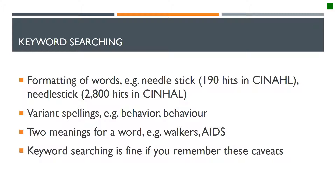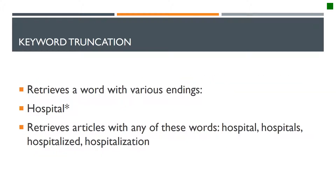Keyword searching is fine if you just remember these different caveats. It's also important to note that with keyword searching, you can also use truncation. Truncation is the asterisk at the end of the root word that will search for all the various endings of the word, like hospital, hospitals, hospitalization, and hospitalized.